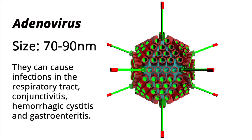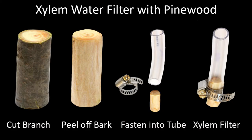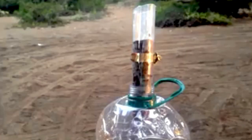Other smaller viruses can pass through the filter, but research suggests that other types of wood with smaller pores could filter out these smaller pathogens. To make a homemade water filter, peel the bark of a pine branch and stick it in a tube, sealing the spaces between the twig and the tube with epoxy glue. Each twig filters 4 liters of water per day, enough for one person.